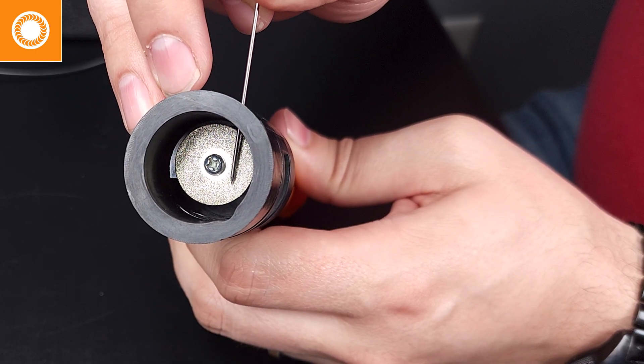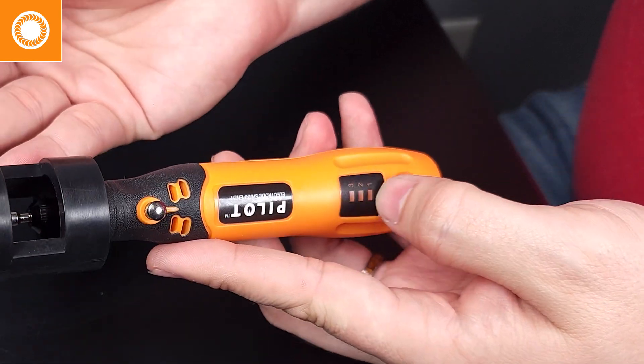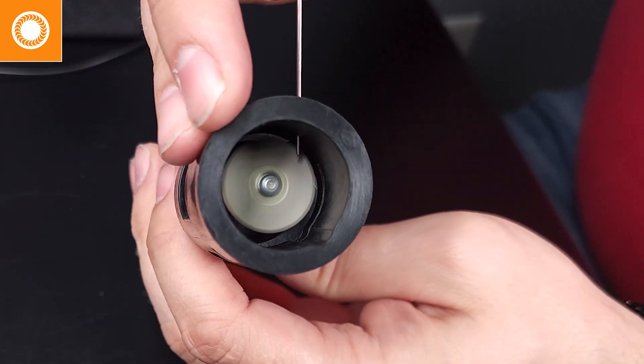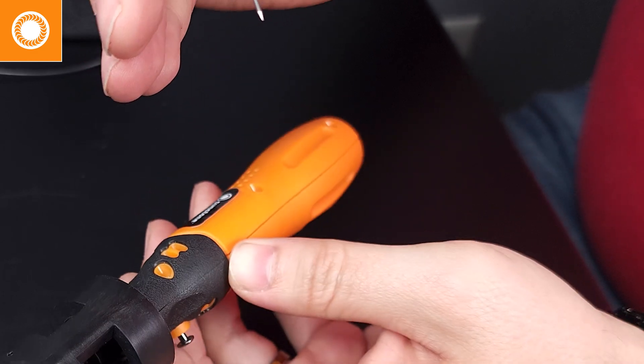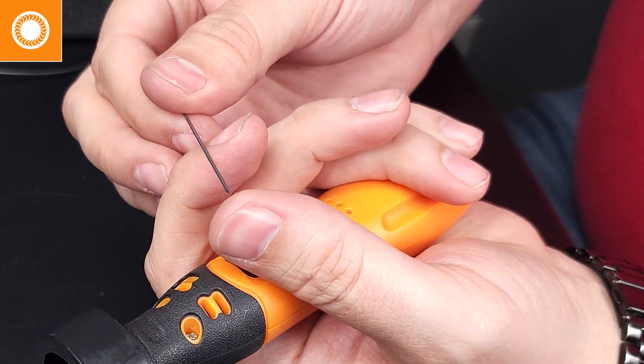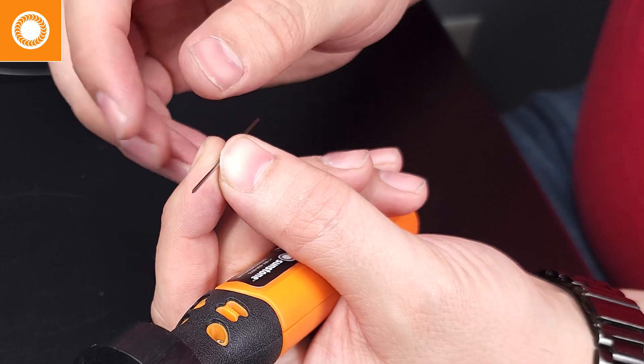And we can still do that spinning motion while working this. So we're going to pull that out, set it to 3, and then we're going to just spin it. Turn that off. Again, I always like checking, and that feels amazing. Nice and sharp.